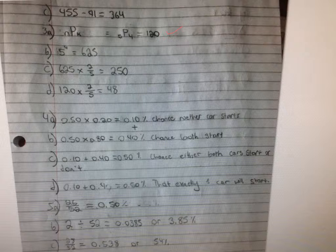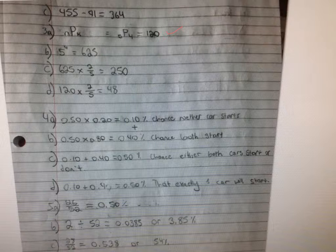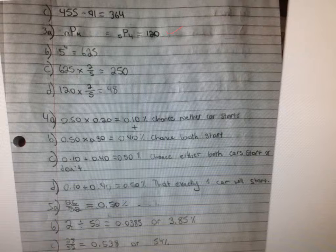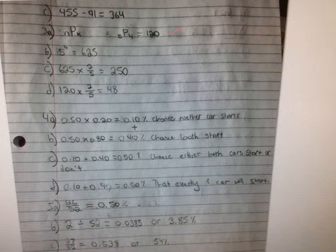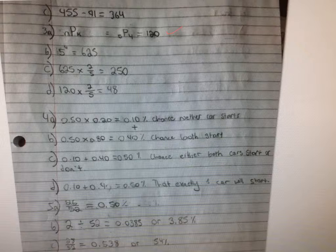And so with 3B, they're asking you if the digits can be repeated, and that's right. You would do five times five times five times five, that's good. And then for C, if it's only even numbers, I see what you're doing there. You're saying two-fifths of them are even numbers and you took that times 625. I don't think that's going to work there. What you have